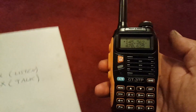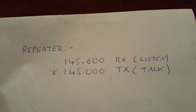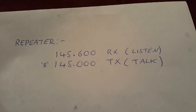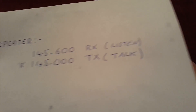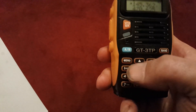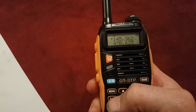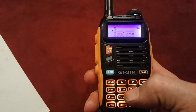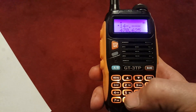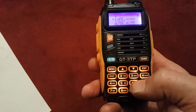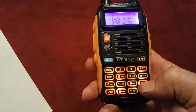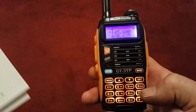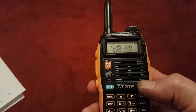So first of all what we want to do is program in our RX frequency. You just type that in as a six-figure number, so we have 145.600 - that's our 145.600 RX. Okay, we need to save that.